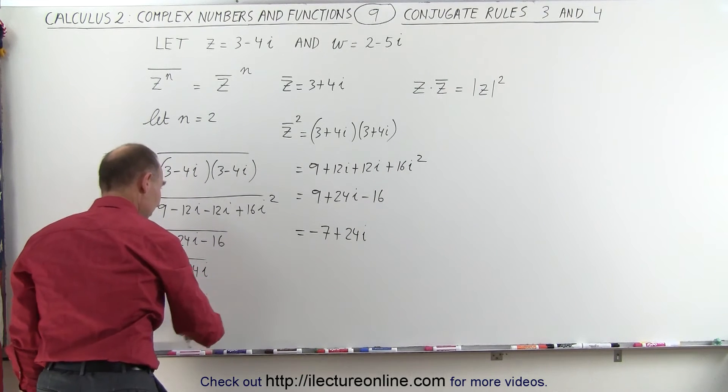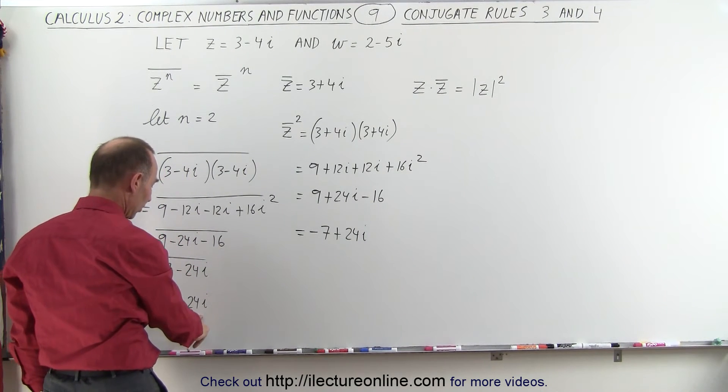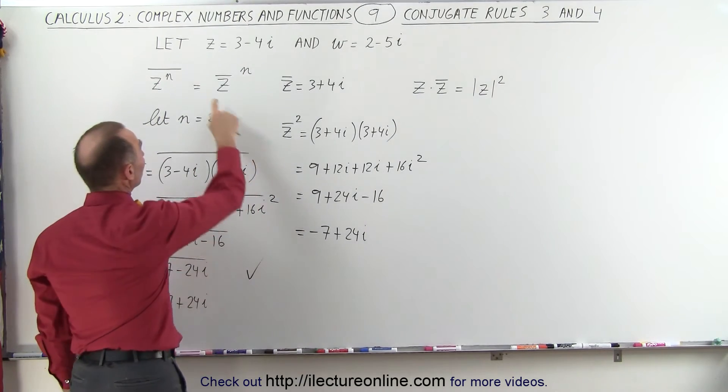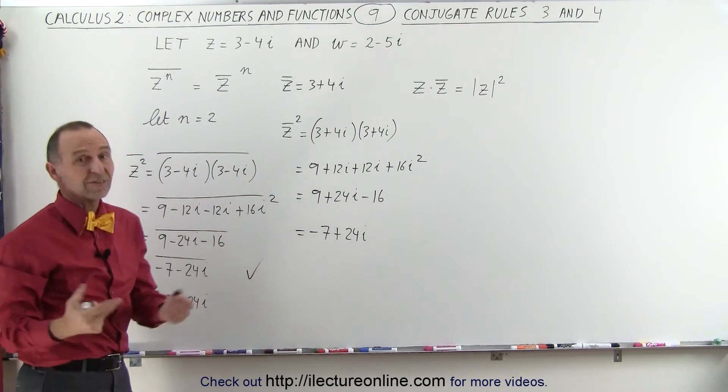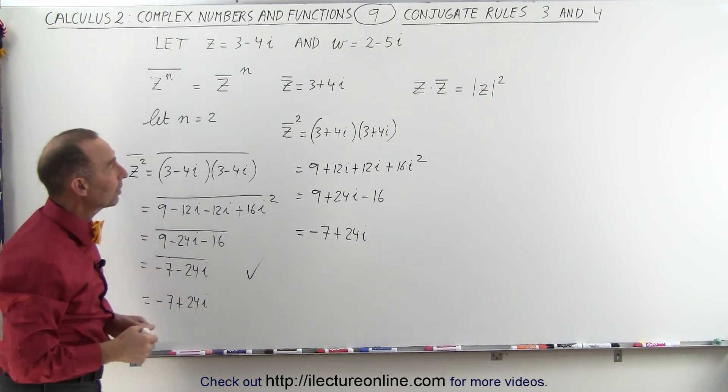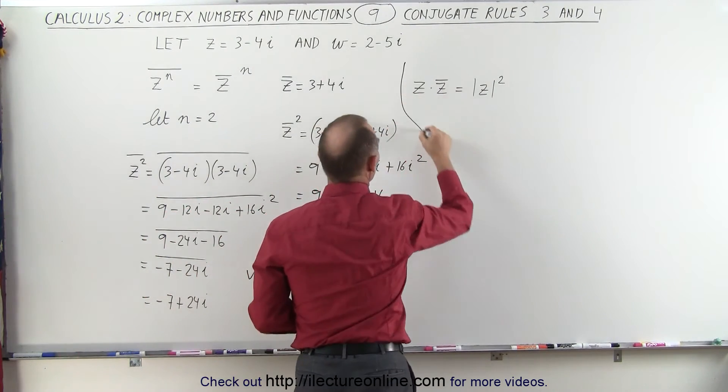And notice that, yes, indeed, minus 7 plus 24i equals minus 7 plus 24i. They're equal to one another. So this has been illustrated with a simple example. Not proved, but at least illustrated.